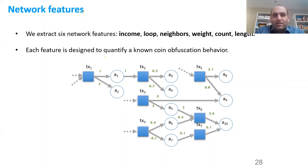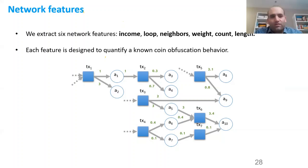We extract six network features. Income is the number of Bitcoins an address received — a very useful feature since early ransomware asked for 0.5 or 1 Bitcoin. Other features — loop, neighbor, wait count — are extracted from the network to quantify known obfuscation behavior. Hackers are smart: they don't use the same patterns and start using obfuscation methods such as creating artificial transactions to send money to other addresses and then merging them, looping through addresses. These features are intended to encode this behavior.